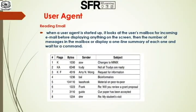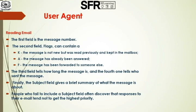The next main functionality of user agent is reading email. When a user agent is started up, it looks at the user's mailbox, that is, inbox for incoming email. In the inbox, there are many fields: number, flags, bytes, sender, and subject. The first field is used to provide a sequence number, that is, the message number. The second field is the flag. It contains three variables: K, A, or F. K means the message is not new, that is, already read. A means the message has been already answered. F means the message has been forwarded to someone else. The third field tells how long the message is, and the fourth field tells to whom the message has been sent. Finally, the subject field gives a summary of what the message is about.